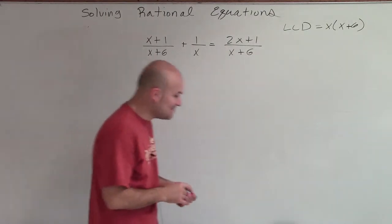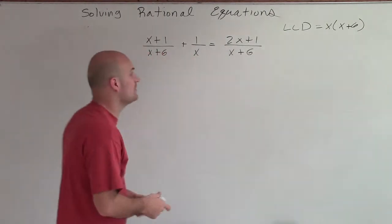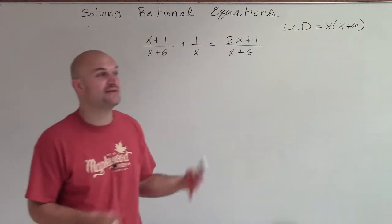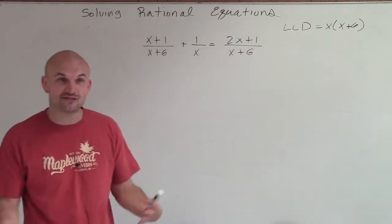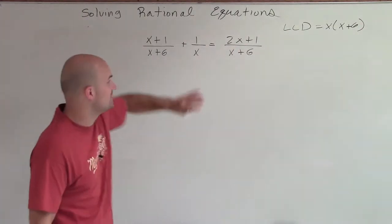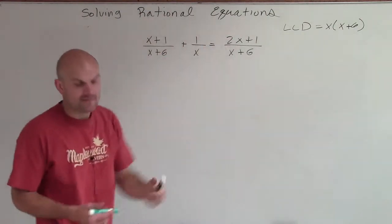So now, to eliminate our denominators, we multiply every single term times x times x plus 6. We have to make sure we multiply every single term because it's an equation. Whatever you do on one side, you have to do on the other side. And you just can't multiply on one side. You have to make it equivalent.